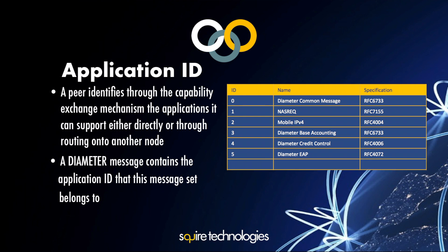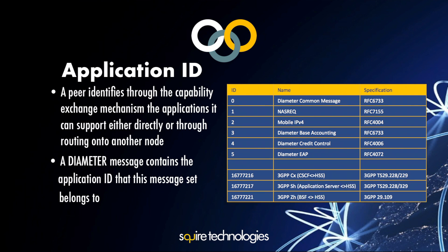Then you have the vendor-specific applications. 3GPP is a vendor and they have extended or created new ones to support applications within the IMS network. They've got an application ID, a specification against it, and a name. For example, Cx is between the CSCF and the HSS, Sh is between the application server and the HSS, and Zh is the BSF to the HSS. These are defined interfaces published so that everyone can be compliant within the IMS environment.